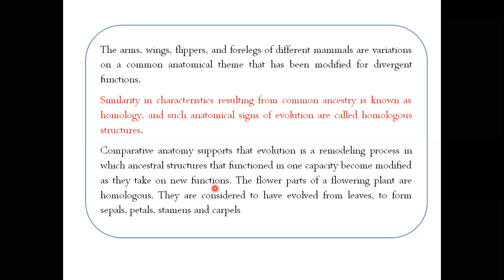An example of homologous structures includes the four limbs — wings and flippers — which have a common anatomical theme due to common origin. In plants, certain structures are considered to have evolved from leaves to form sepals, petals, stems, and carpels. These leaf-origin structures are homologous organs.